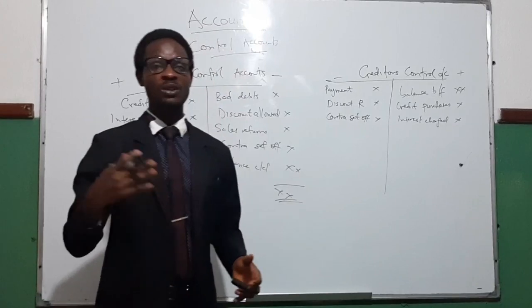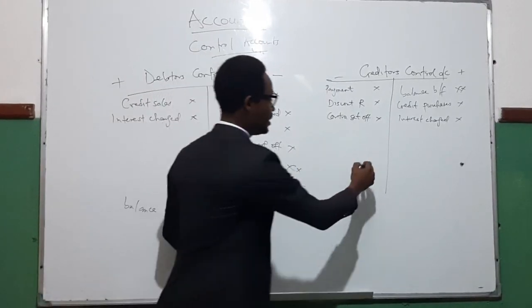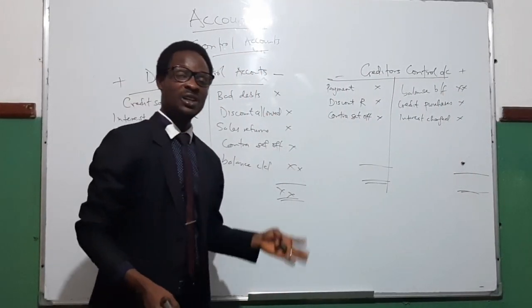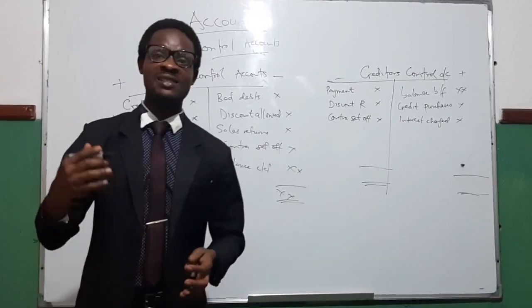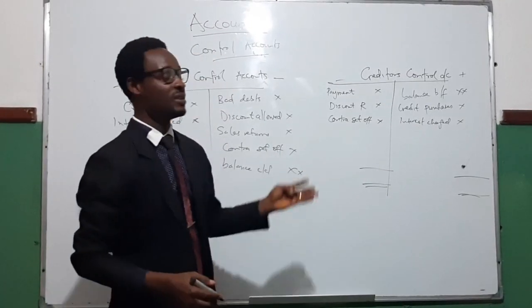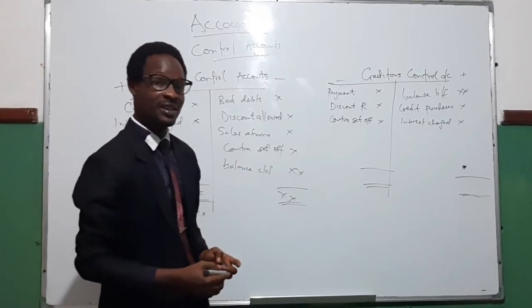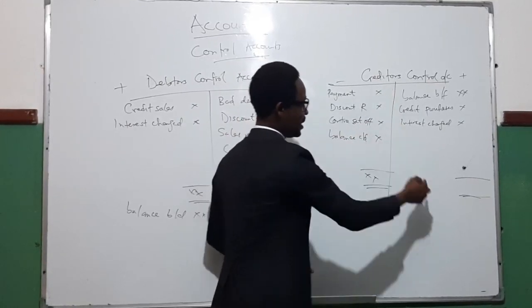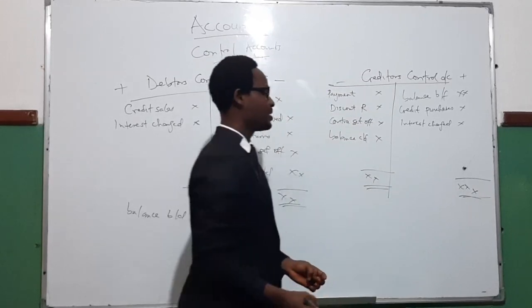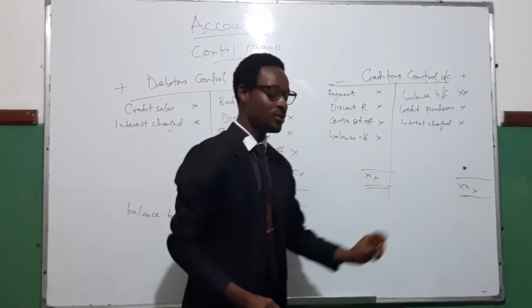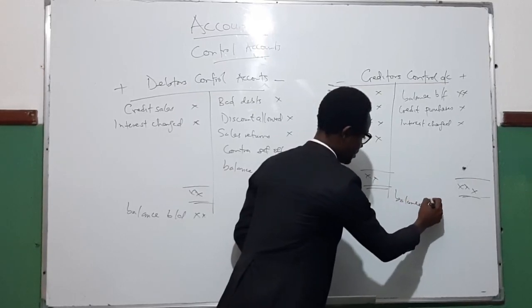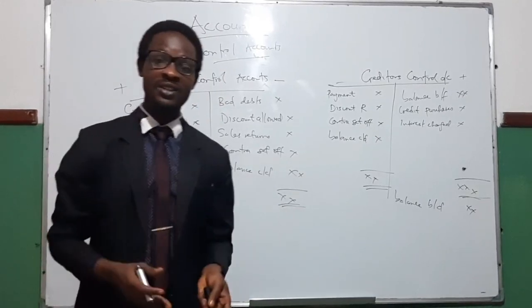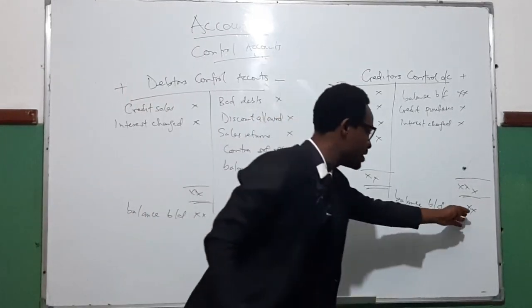At the end of the period, we add up the left-hand side and add up the right-hand side. The one that is smaller — which is most times the left-hand side — will be the balance carried down. The balance brought down will be on the opposite side, which means the balance of existing creditors at the end of the period is this amount.